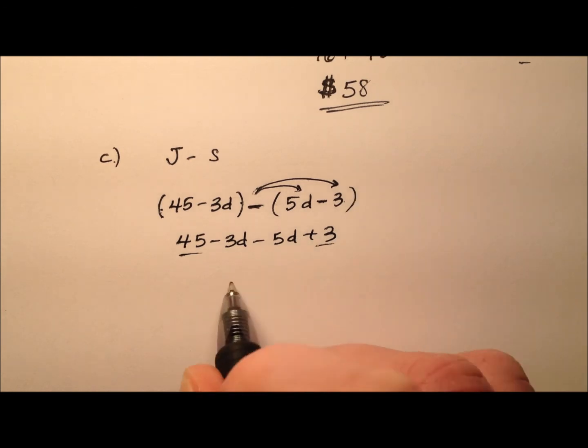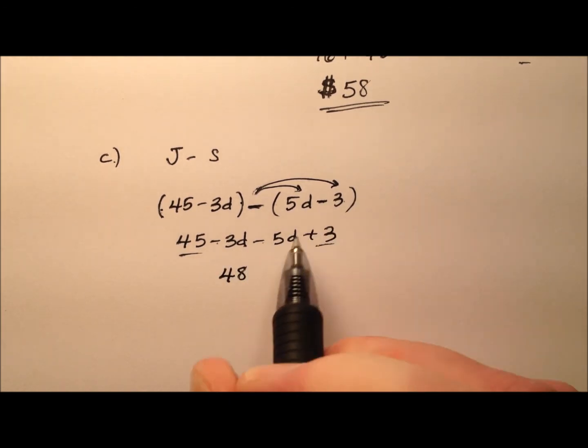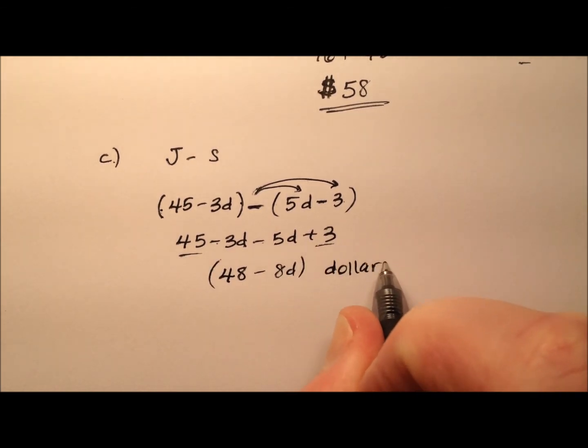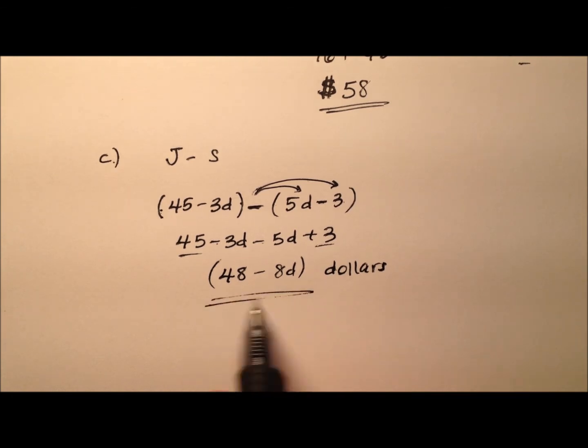So 45 plus 3 is 48, and then negative 3d and negative 5d is negative 8d. That expression, 48 minus 8d dollars, is the amount of money that Joe has more than Sue.